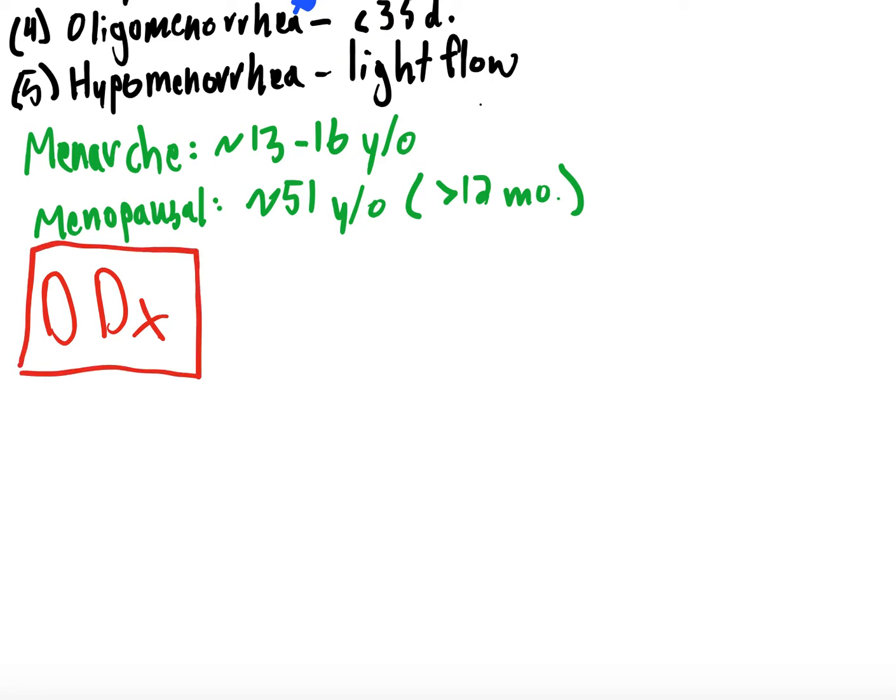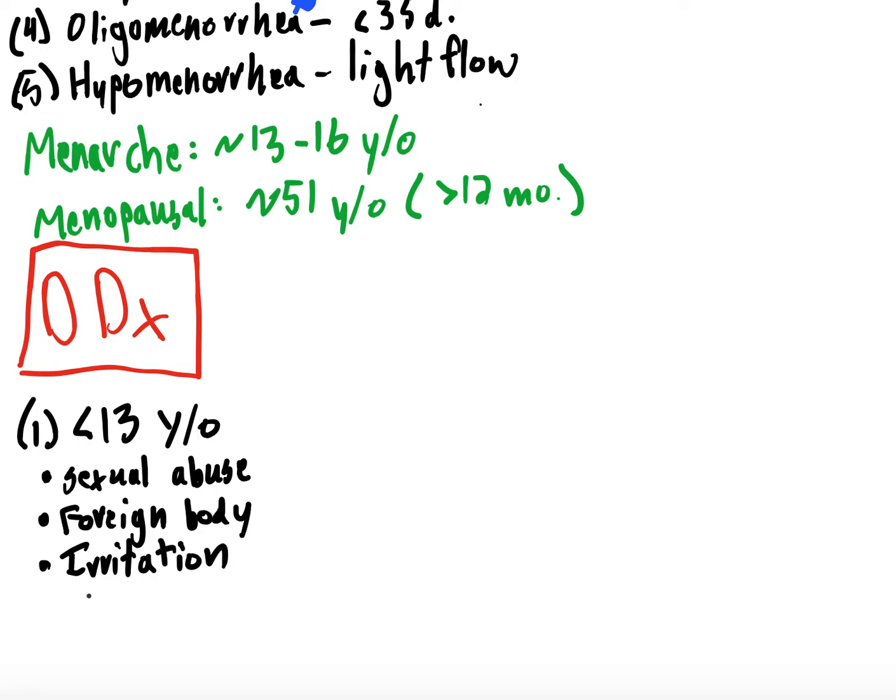I think the easiest way to think about this is age determinants, right? So the first category would be less than 13 years old, right? So these patients don't typically have their menses yet. So things you unfortunately need to worry about is sexual abuse, right? These patients shouldn't have any bleeding down there. Another thing is foreign body. So if something got into the vaginal canal and is causing irritation and bleeding, along those same lines, just general irritation, whether it be from soaps or other irritants. Another one, and this is, you know, not very typical, but urinary tract malformations. Vascular malformations can cause what looks to be uterine bleeding, but it's actually coming out of the urethra.